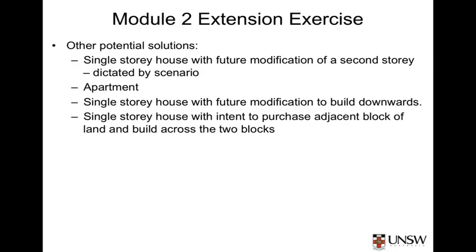They might build downwards and build a large basement area that would be able to provide the required space. Similarly, they could build a single storey house and look to purchase the adjacent block of land in five or so years' time, and then extend the house over two blocks of land. This may provide a greater return if they intend to sell the house and downsize once the children have left home.